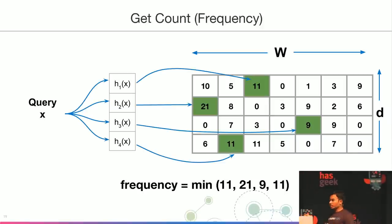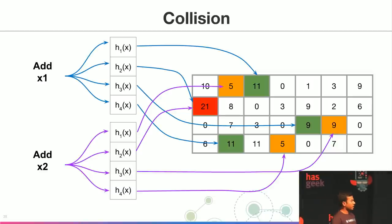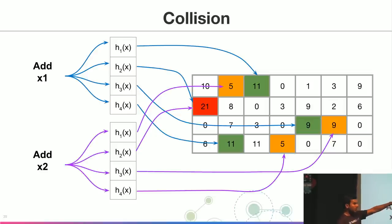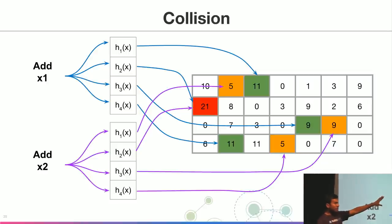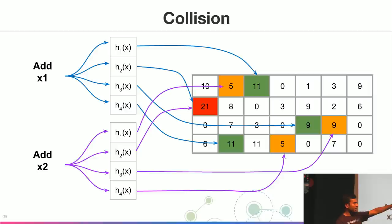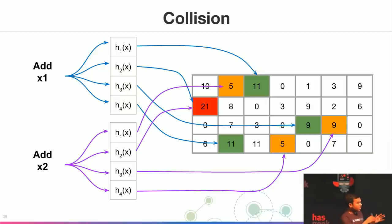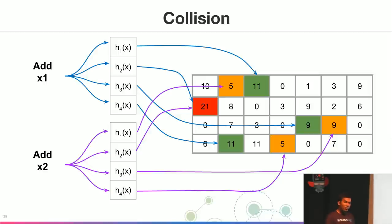We take the minimum because of collisions. For instance, if x1 and x2 both map to the same bucket under hash function h2 with index 21, every insert of x1 or x2 increments that same bucket — this is the overestimated value. Taking the minimum from all bit arrays gives us the value with the least amount of error. By choosing appropriate values of depth and width, we can have bounds on these errors.